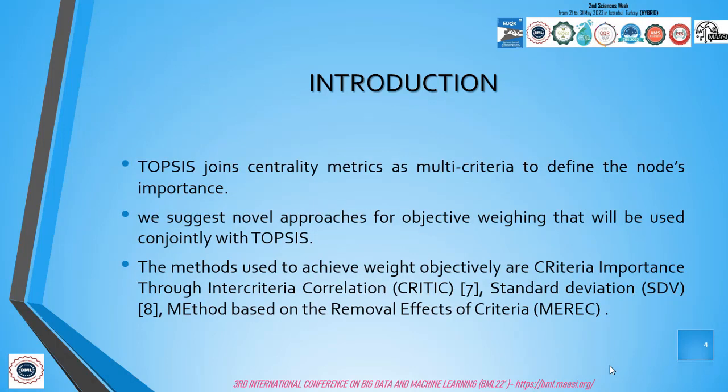Previous research has used centrality metrics to determine node importance. For example, they consider nodes with a high metric of centrality, whether degree, closeness, or betweenness, as the most important nodes. However, these metrics have some limitations. To address this issue, we apply TOPSIS, a technique for order preference based on closeness to the ideal solution.